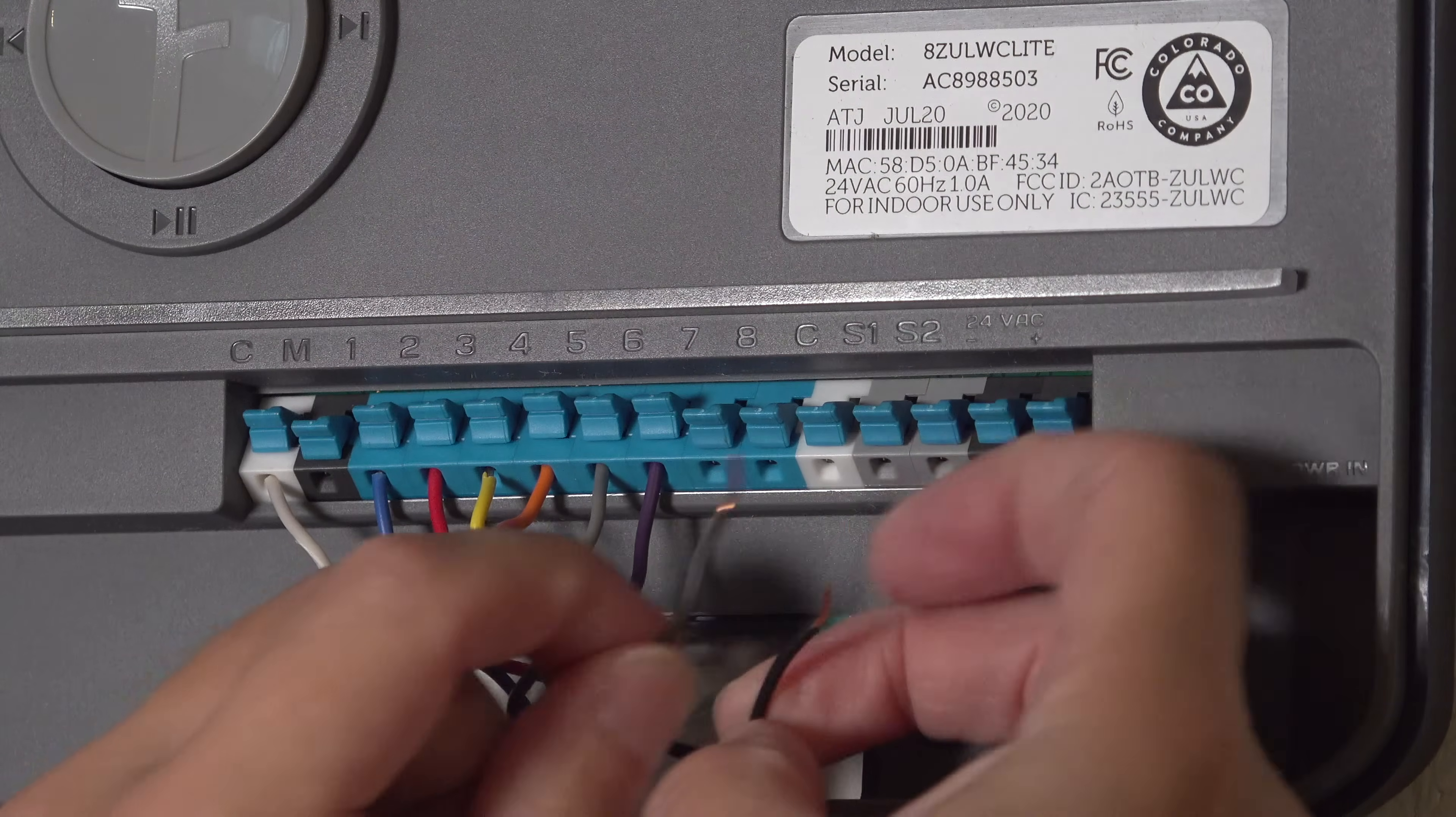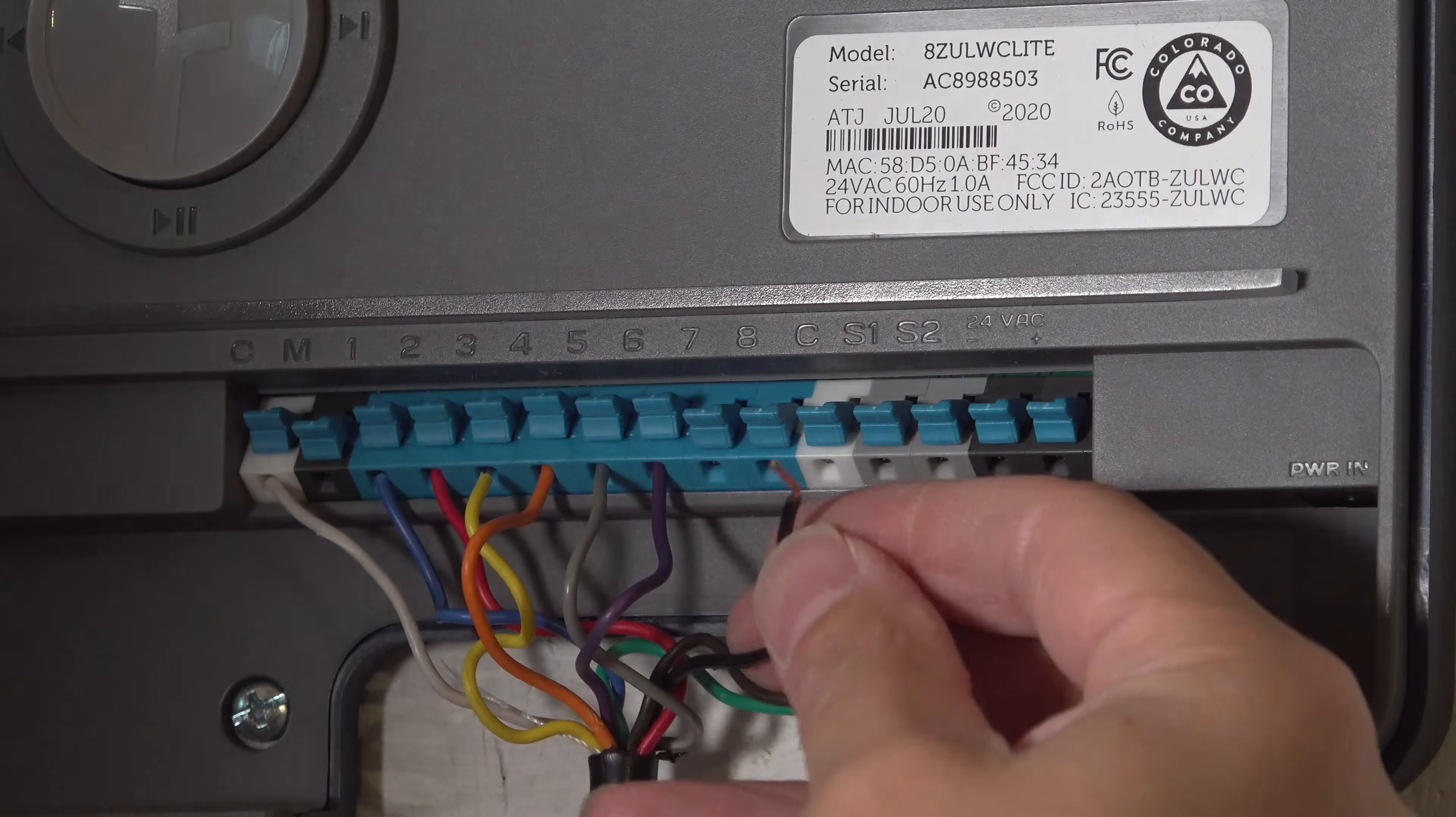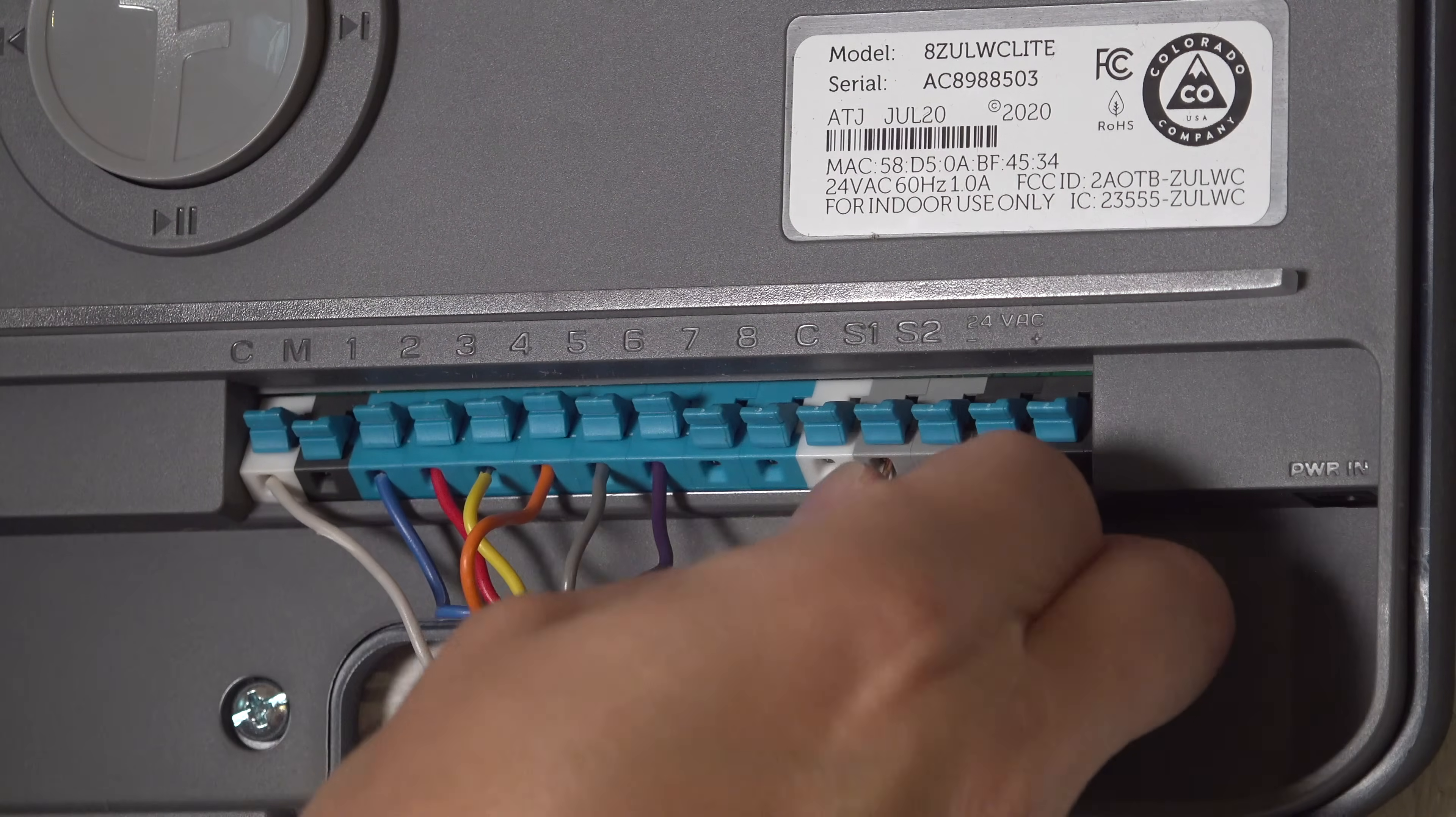If the wire was bent off to the side like it was on ours, just do the same thing on the Rachio.